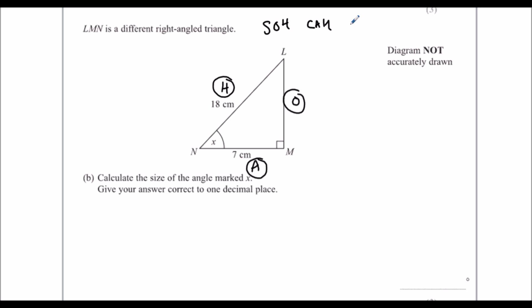So we're not using the O, we're using the A and the H, so that's CAH, it's cos. So cos angle, x in this case, equals adjacent, 7 over hypotenuse, 18.